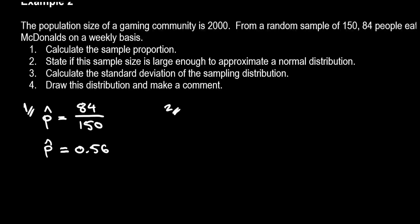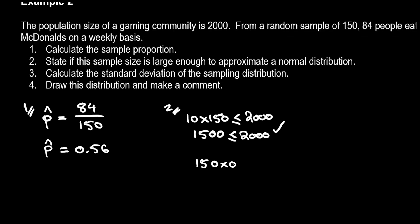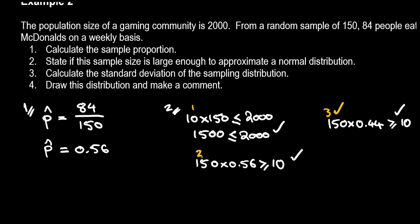For the first part, P-hat equals 84 divided by 150, which is 0.56 — so 56% of people in this community eat McDonald's on a weekly basis. To state if the sample size is large enough, we need to satisfy the three properties. I can see all three cases are satisfied — I need to satisfy the first two to approximate a normal distribution, and I've also confirmed I'm not taking more than 10% of the population, so it is an appropriate sample size.